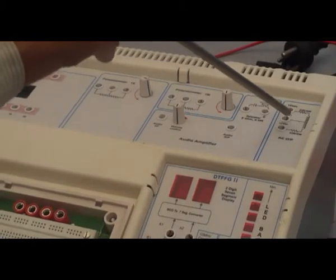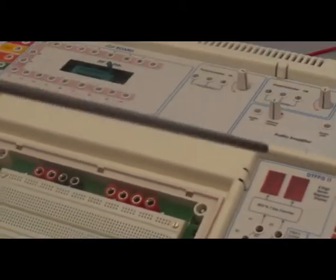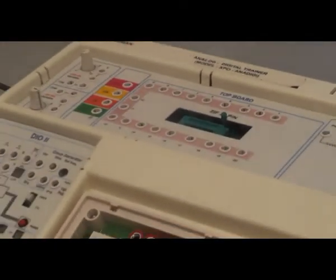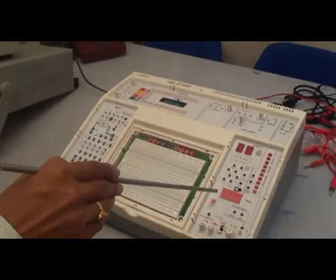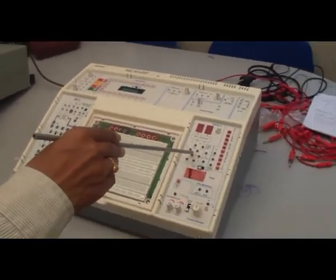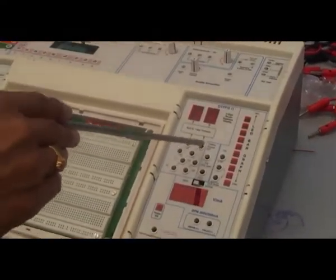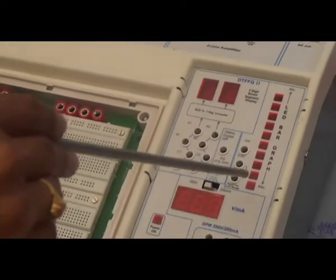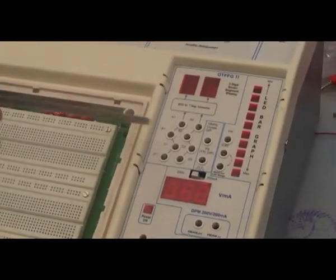This is 0, plus 12, minus 12, AC supply. This is DTF FG 2, reset portion of the master unit.